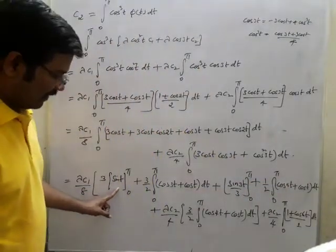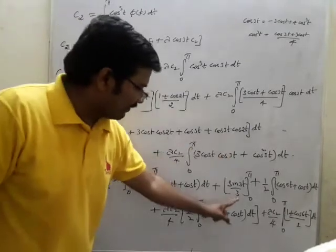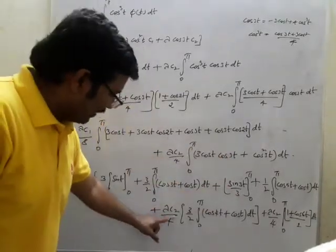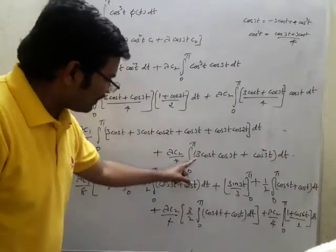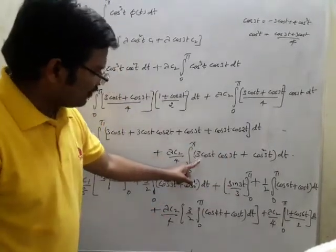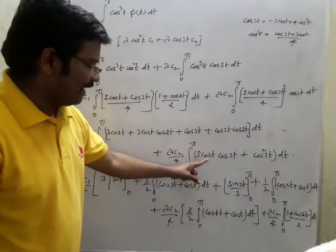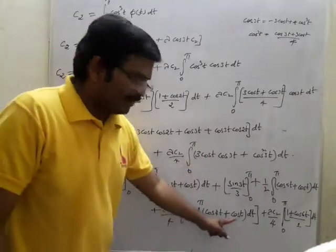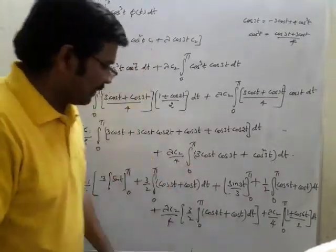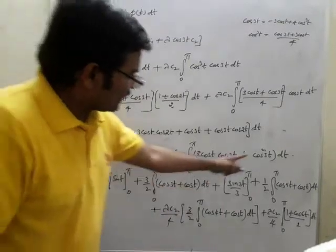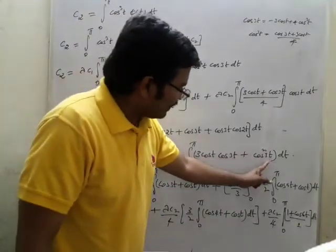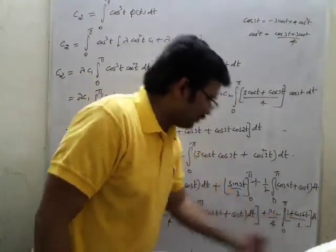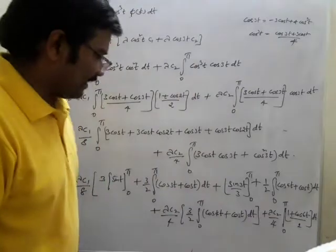This is what we have done here. For this, λ·c2 by 4, this is again 3/2, so using 2cos(a)cos(b) = cos(a+b) + cos(a-b). And for cos²(3t), that is (1 + cos 6t)/2. So we are going to solve the remaining part which we have already set up.